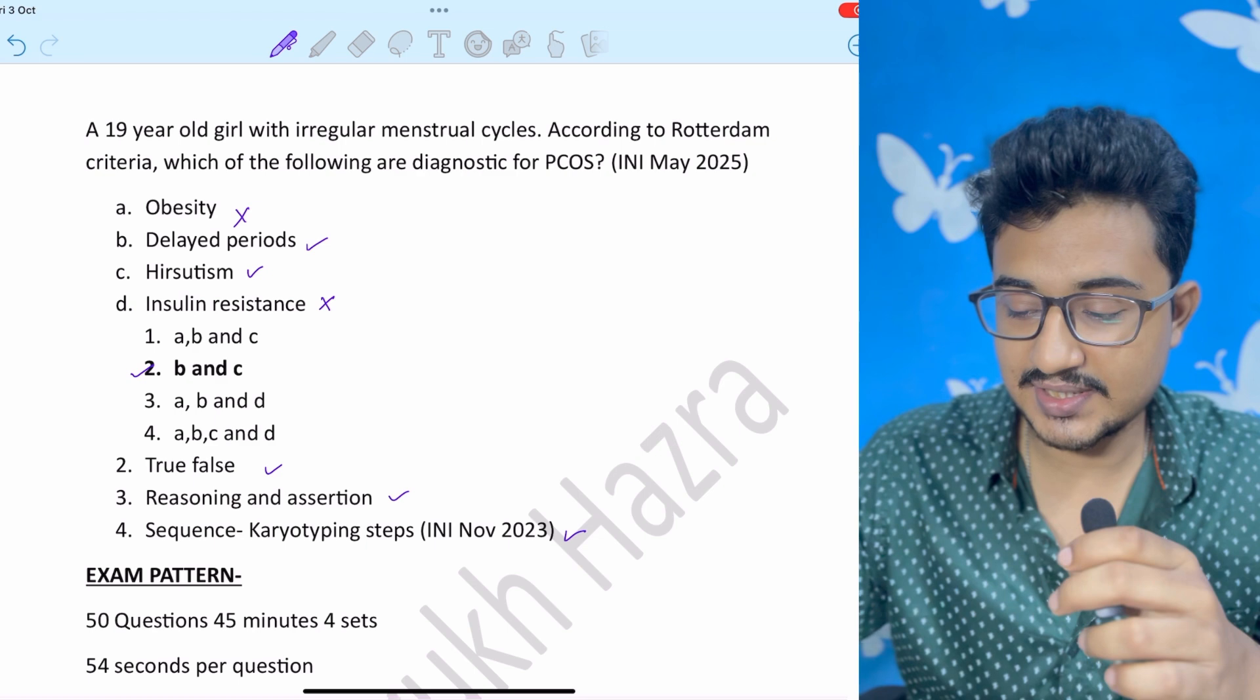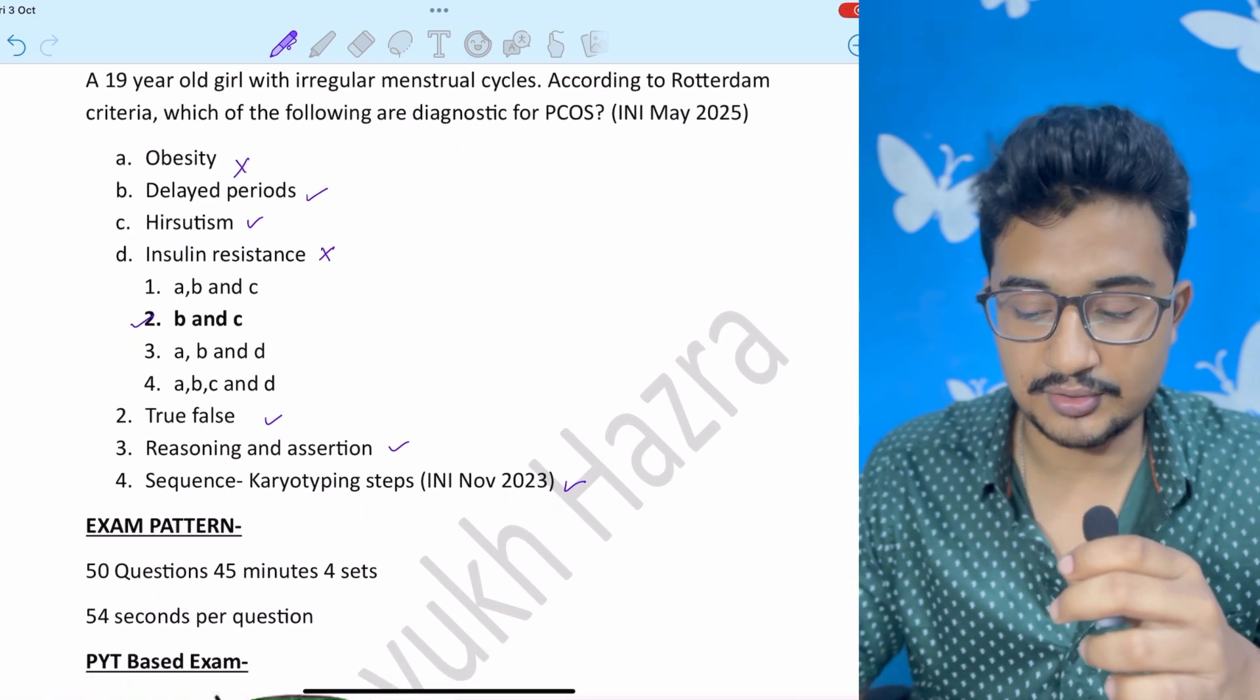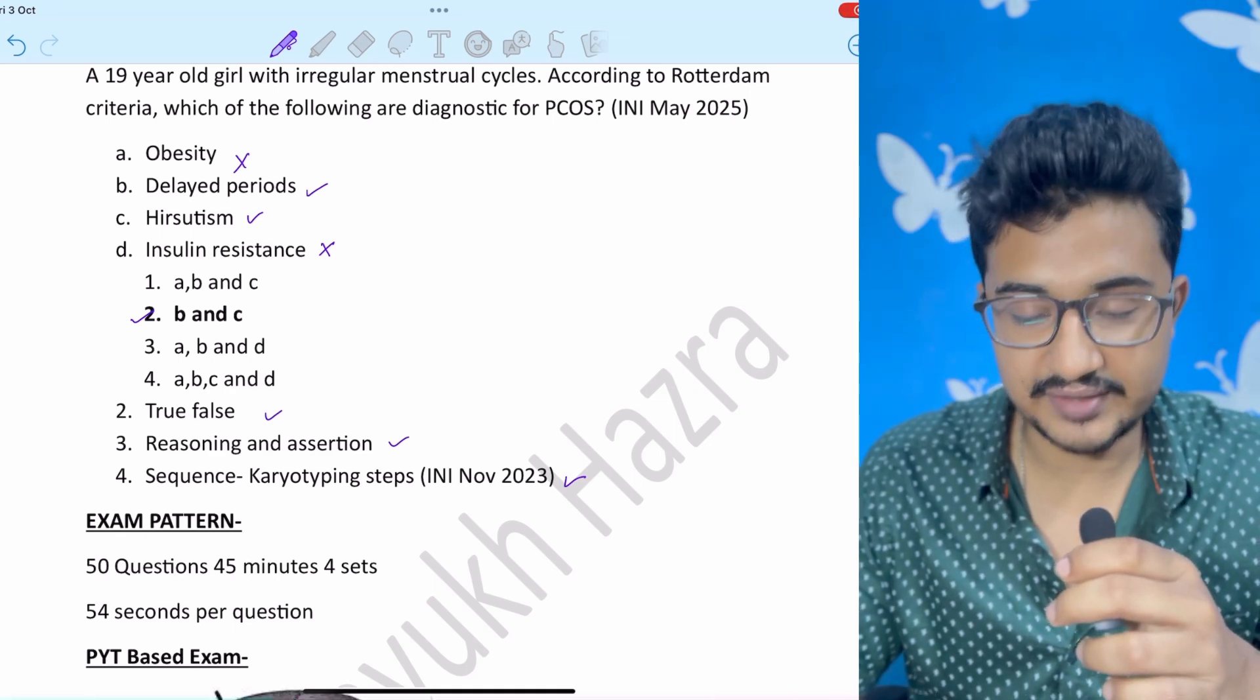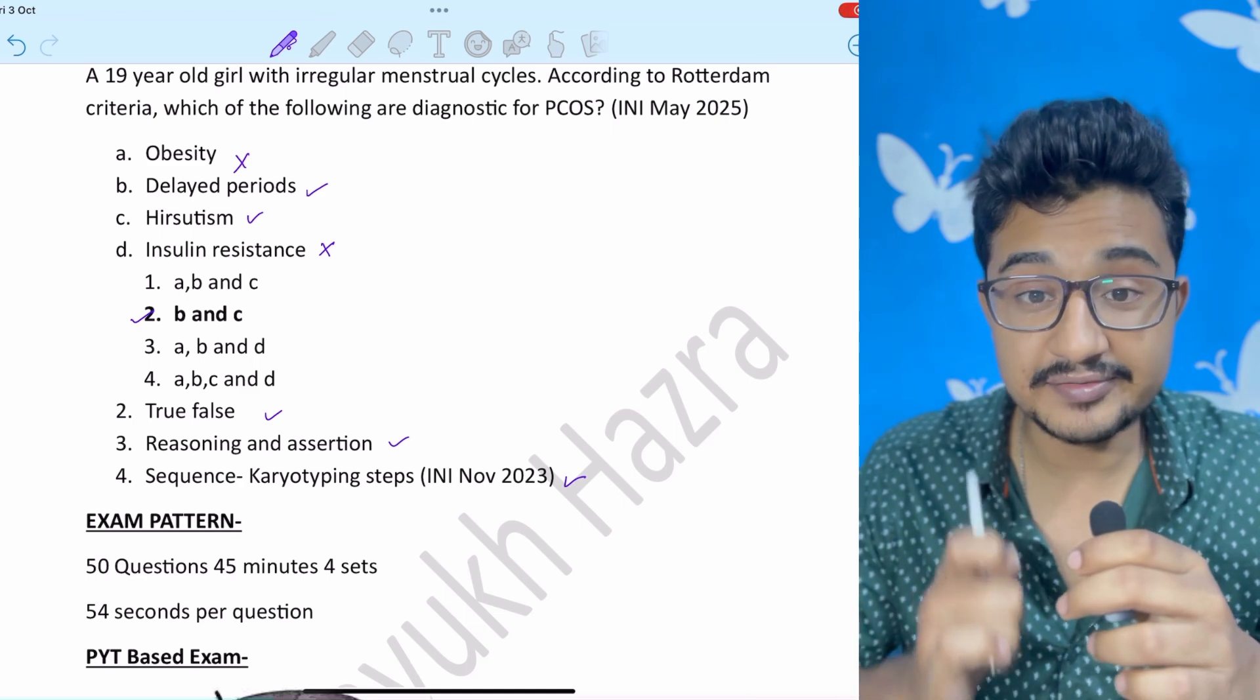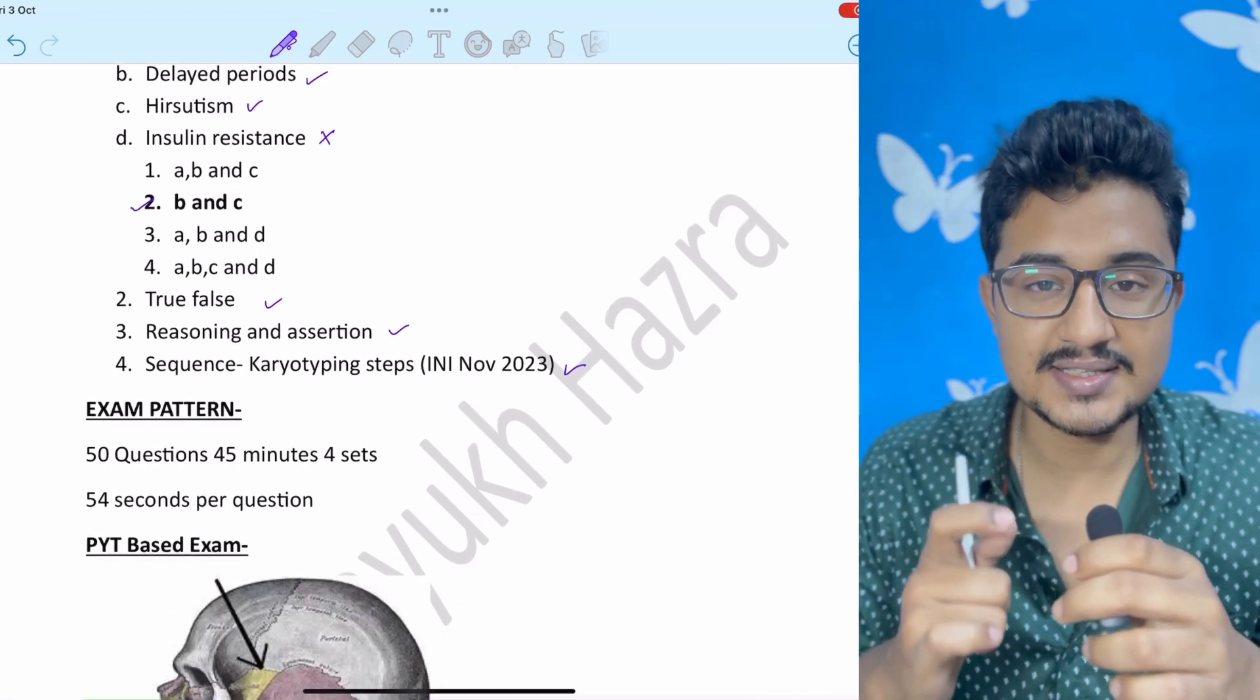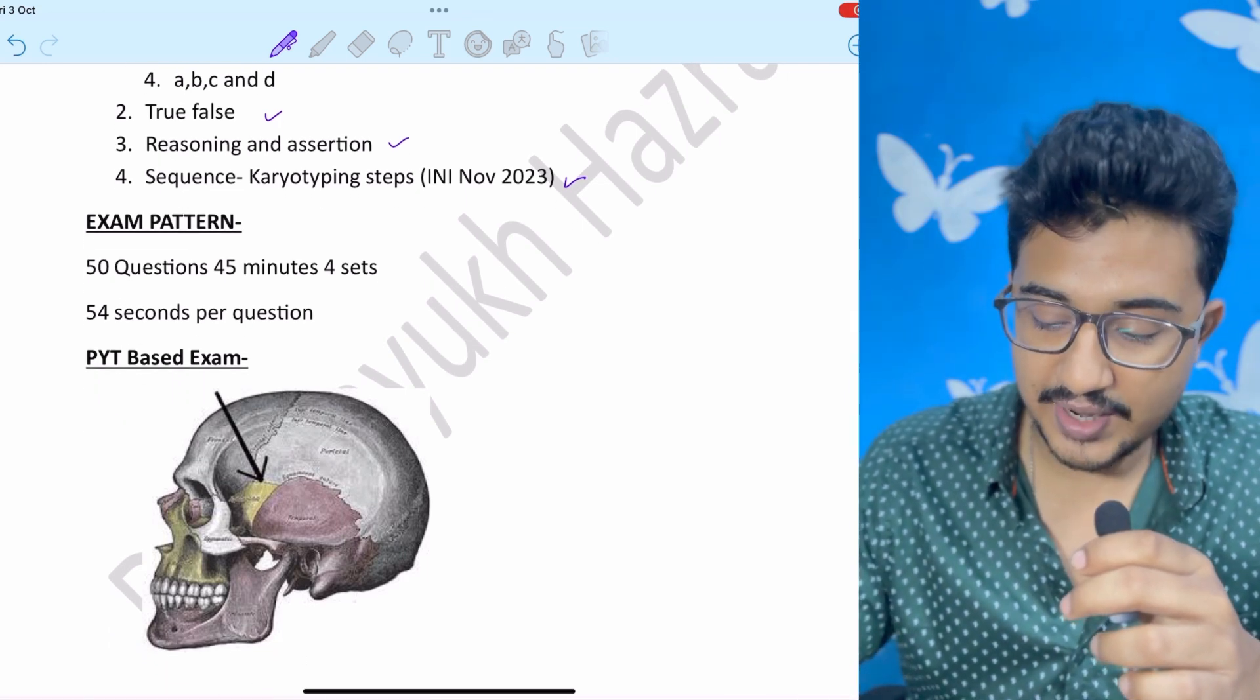Sequence type questions came in INICET November 2023 like the karyotyping sequence and all. Exam pattern is 50 questions, 45 minutes, 4 sets so you get only 54 seconds per each question. There is a time crunch. It is a PYQ based exam.